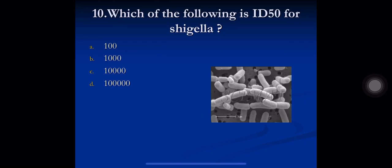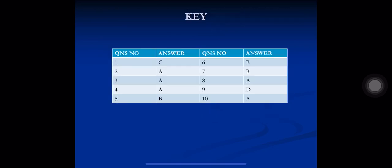Question 10: which of the following is ID50 for Shigella? ID50 means the infective dose in 50% of volunteers. Options: A) 100, B) 1,000, C) 10,000, D) 1 lakh. For Shigella, as little as 10 to 100 bacilli can cause disease, so the ID50 is A) 100.